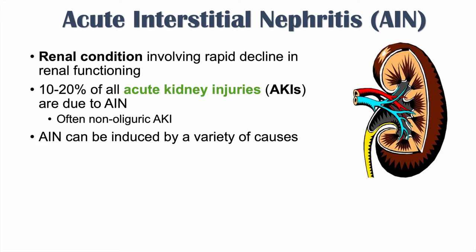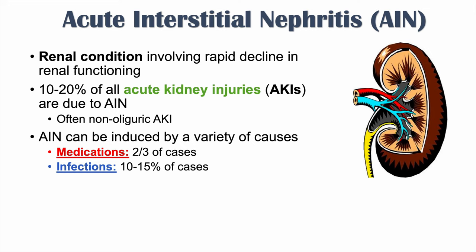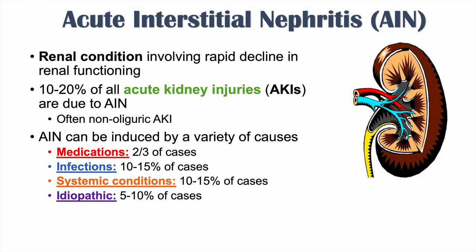AIN can be induced by a variety of causes. Medications are by far the most common cause, accounting for approximately two-thirds of cases. Infections account for about 10% to 15% of cases. Systemic conditions also account for 10% to 15%. And idiopathic cases, where we don't know the cause, account for about 5% to 10%.